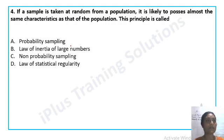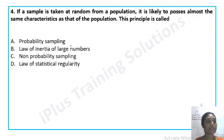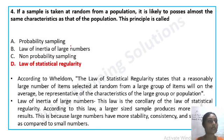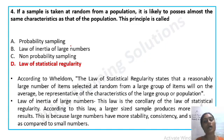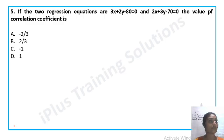Next question: If a sample is taken at random from a population, it is likely to possess almost the same characteristics as that of the population. This principle is called: Option A: probability sampling, Option B: law of inertia of large numbers, Option C: non-probability sampling, Option D: law of statistical regularity. The answer is Option D, law of statistical regularity. According to this law, a reasonably large number of items selected at random from a large group will on average be representative of the characteristics of that population.